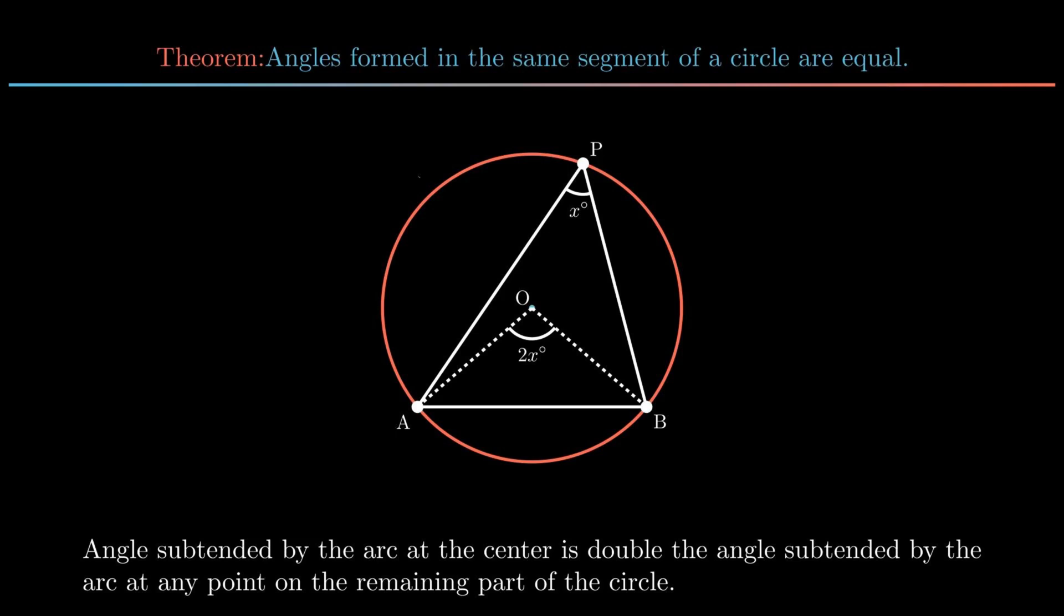Consider another point Q on the same side of the segment such that angle AQB is equal to y. Now angle at the center with reference to angle AQB is 2y. It is clear from the figure that angle AOB with reference to point P and point Q is the same.